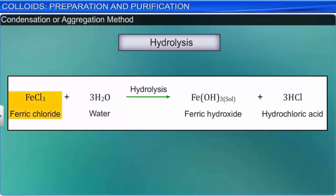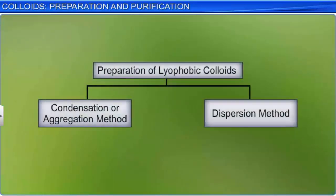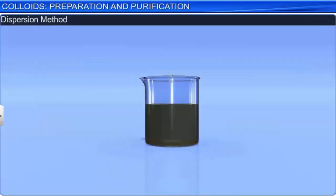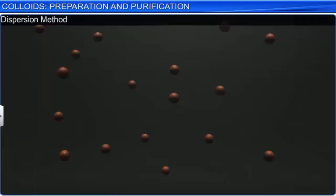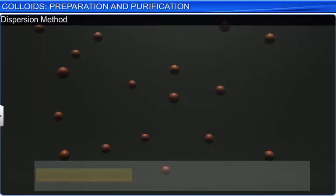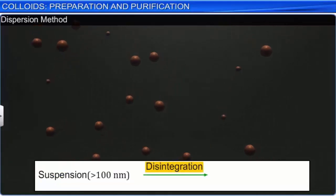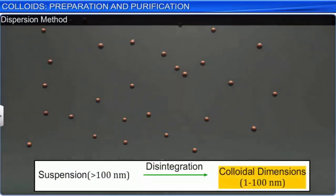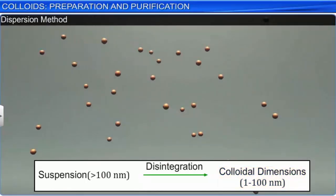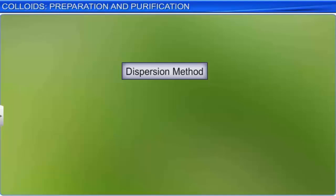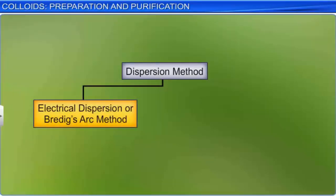Another reaction commonly used for the preparation of salts is the hydrolysis of the corresponding chlorides. For example, if a small quantity of ferric chloride is added to boiling water, a ferric hydroxide sol is obtained. Let us now discuss the second category: dispersion methods for the preparation of colloids. In these methods, bigger particles of a substance like a suspension are disintegrated into particles of colloidal dimensions.